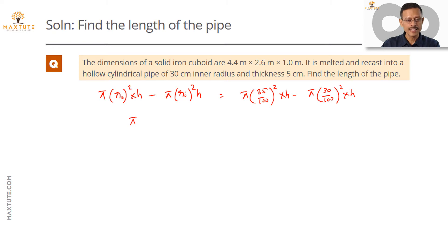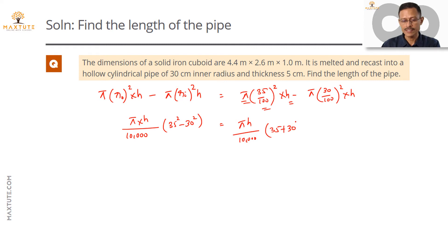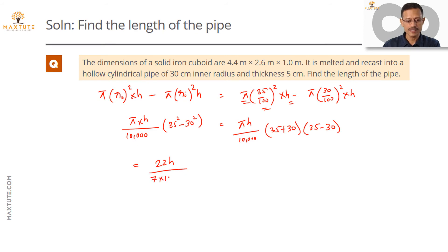Taking 10,000 and h common from both terms, we are left with 35² − 30², which is of the form a² − b² = (a + b)(a − b). So this becomes π h / 10,000 × (35 + 30) × (35 − 30). Writing π as 22/7, this gives 22h / (7 × 10,000) × 65 × 5, which is the volume of the cylindrical pipe expressed in terms of h.